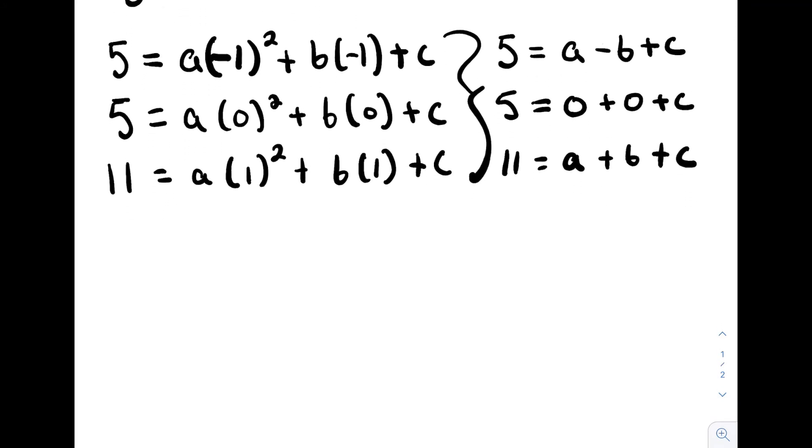We can see that we already have the value for the point c. It's 5. So we can go ahead and plug it in to our first formula, which will give us 5 equals a minus b plus 5. If we take the 5 to the other side, we'll see that a minus b is equal to 0.